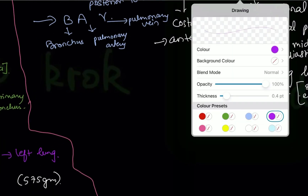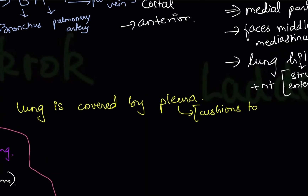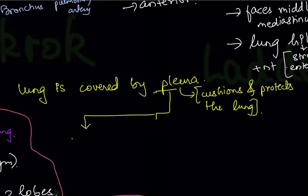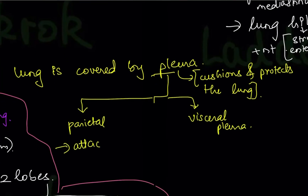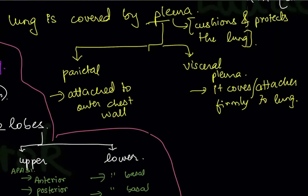The lung is covered by pleura, similar to how the brain is covered by meninges. The pleura cushions and protects the lung as it expands and contracts. There are two layers: the parietal pleura, which is attached to the outer chest wall, and the visceral pleura, which firmly attaches to the lung surface.